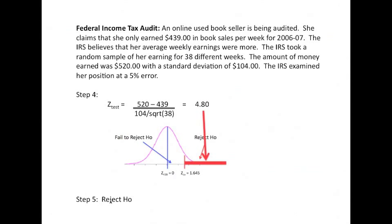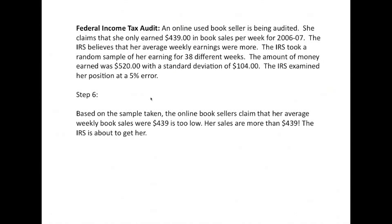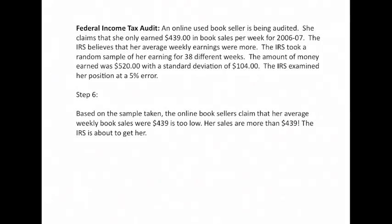So our decision is to reject H0. Now, what that means is that based on the sample taken, the online booksellers claim that her average weekly sales are $439 is too low. Her sales were more than $439 and the IRS is about to get her and they're going to bury her in the rear end and charge her much more in taxes. Now, isn't this cool?